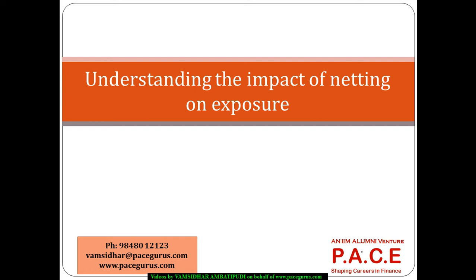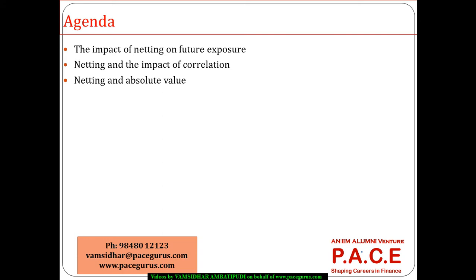Let us try to understand the impact of netting on the exposure. We know that for different kinds of financial instruments, different kinds of exposure calculation mechanisms are there. In a good number of OTC derivative contracts with different kinds of counterparties, netting is a very common phenomenon. I am trying to see what is the impact of netting and how netting plays a role in terms of decreasing the exposure.